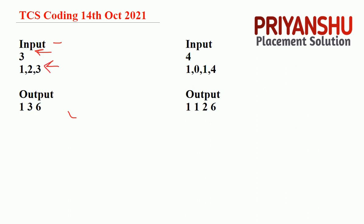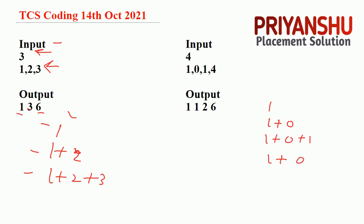You need to print a running cumulative sum. For example, print one, then one plus two, then one plus two plus three, and so on. So for input one, zero, one, four — the output is one, one, two, six. That is: one, one plus zero equals one, one plus zero plus one equals two, one plus zero plus one plus four equals six. I hope the question logic is clear. I will share the question image in the PDF.